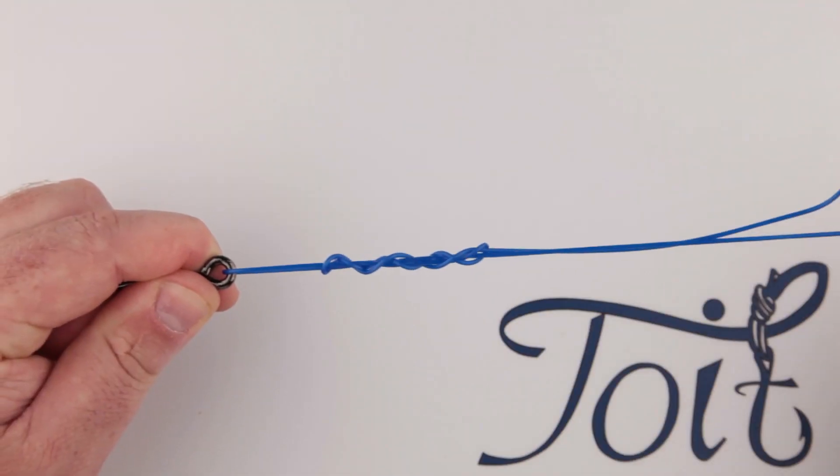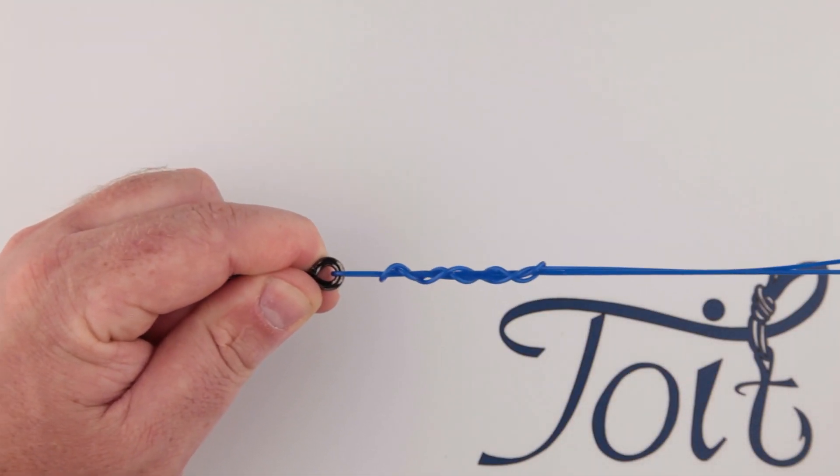Then tighten the knot by pulling the tag in so it's small enough to fit in your mouth. Right, then wet the knot and the line running to the hook with saliva.